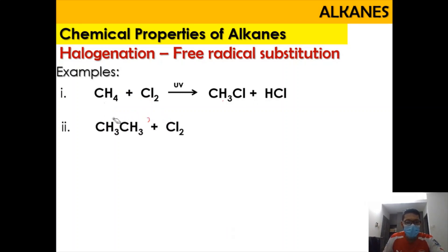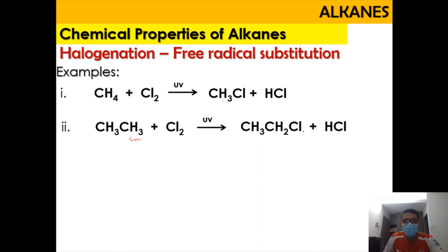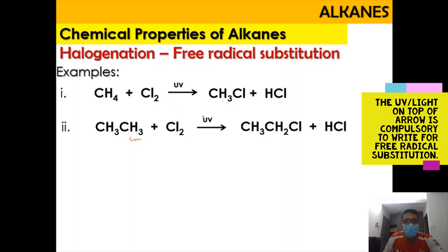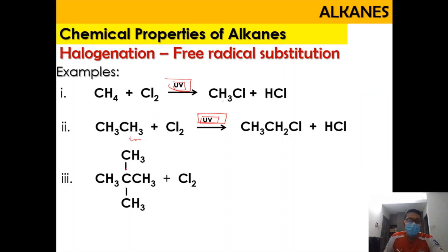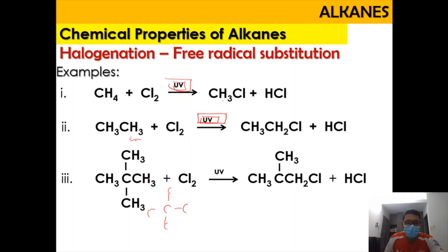The same situation applies for propane — one hydrogen is replaced with chlorine to give CH₃CH₂Cl and HCl. UV is compulsory; without UV, the reaction will not proceed correctly. Similarly, for a molecule where the carbon is a quaternary carbon attached with methyl groups, one of the hydrogens will be replaced with chlorine under UV. You can pick any equivalent hydrogen since the result is still the same.